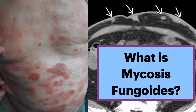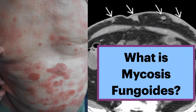What is mycosis fungoides? It is the most common form of a type of blood cancer called cutaneous T-cell lymphoma. These lymphomas occur when certain white blood cells, called T-cells, become cancerous. It characteristically affects the skin, causing different types of skin lesions.